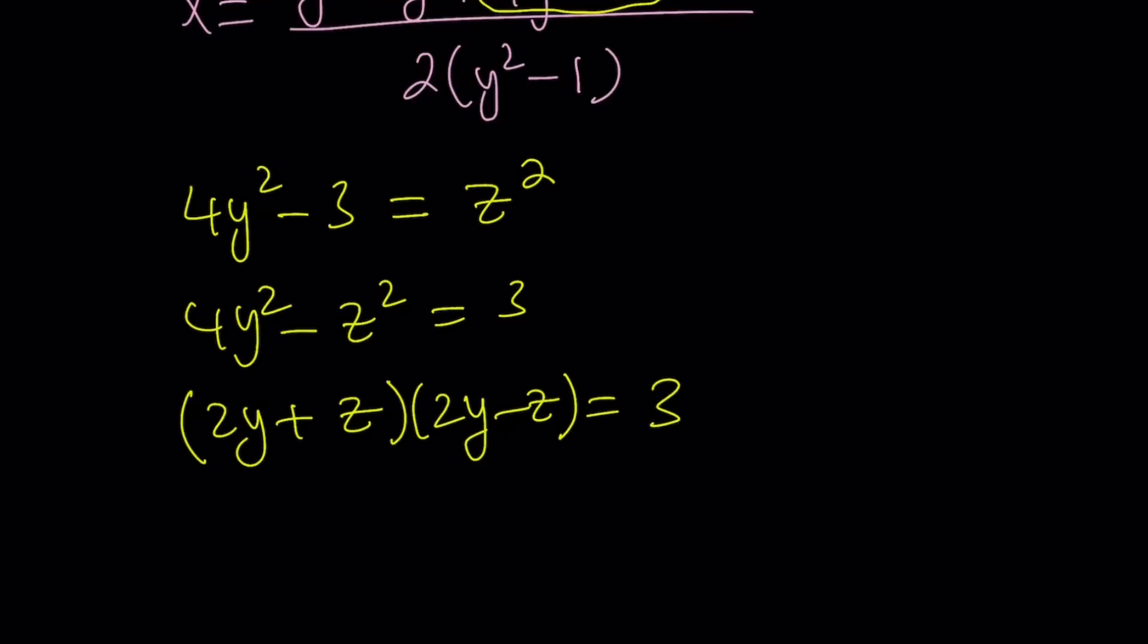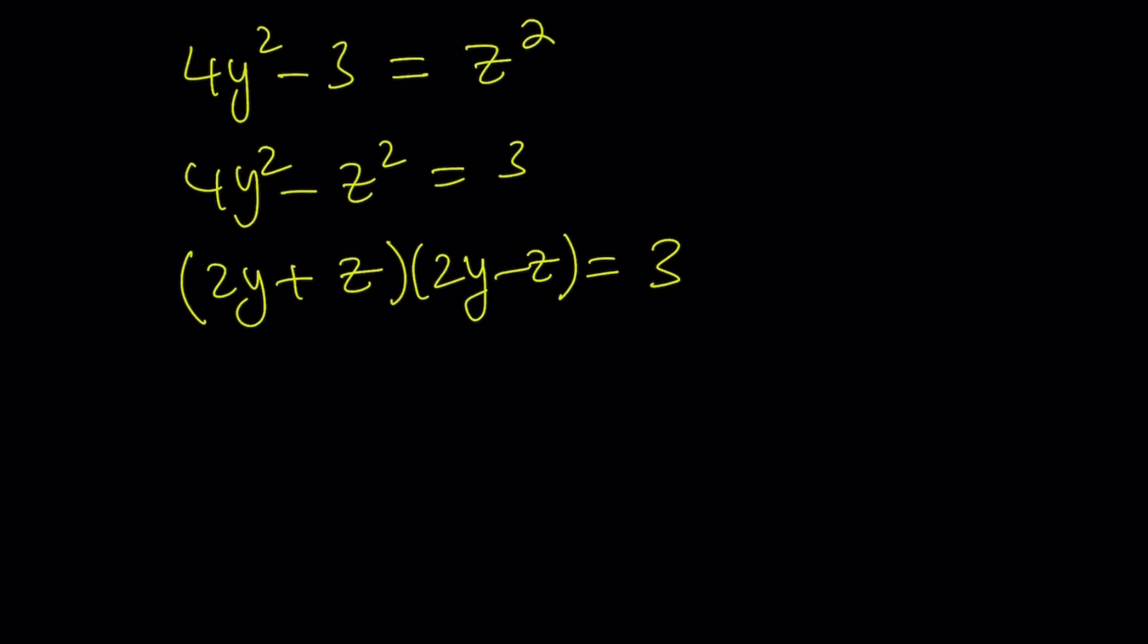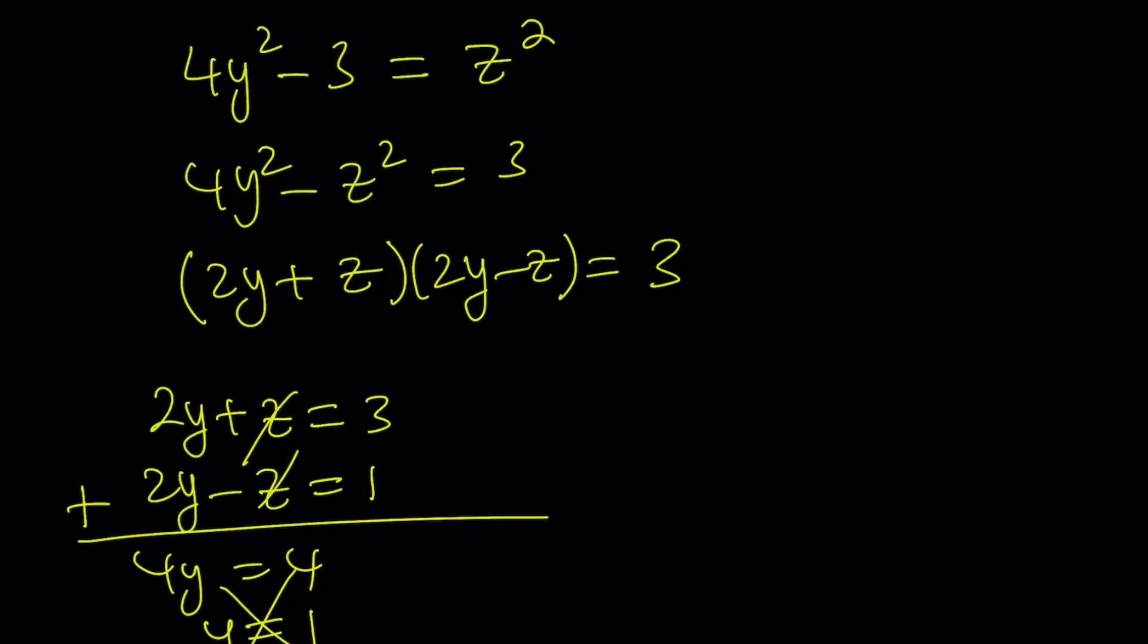Now, we were able to factor it into two factors and 3 is a prime number, so we only have the following cases. 2y plus z can be 3 and 2y minus z can be 1. If we solve this as a system, we get 4y equals 4, and then that gives us y equals 1. But we know that y equals 1 is not going to work, so unfortunately, this doesn't really give us anything nice. How about 2y plus z equals negative 3, and 2y minus z is equal to negative 1. This also works.